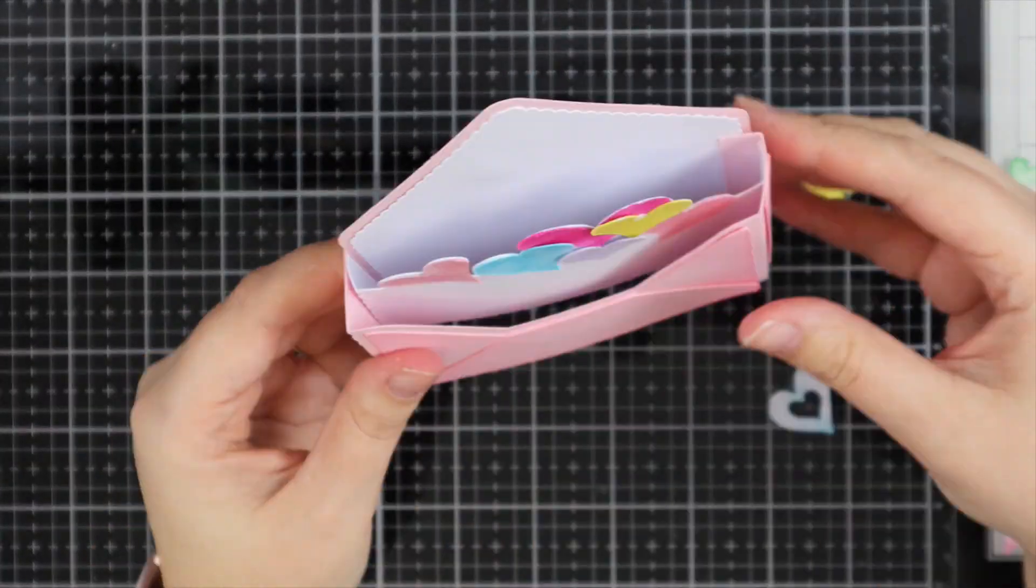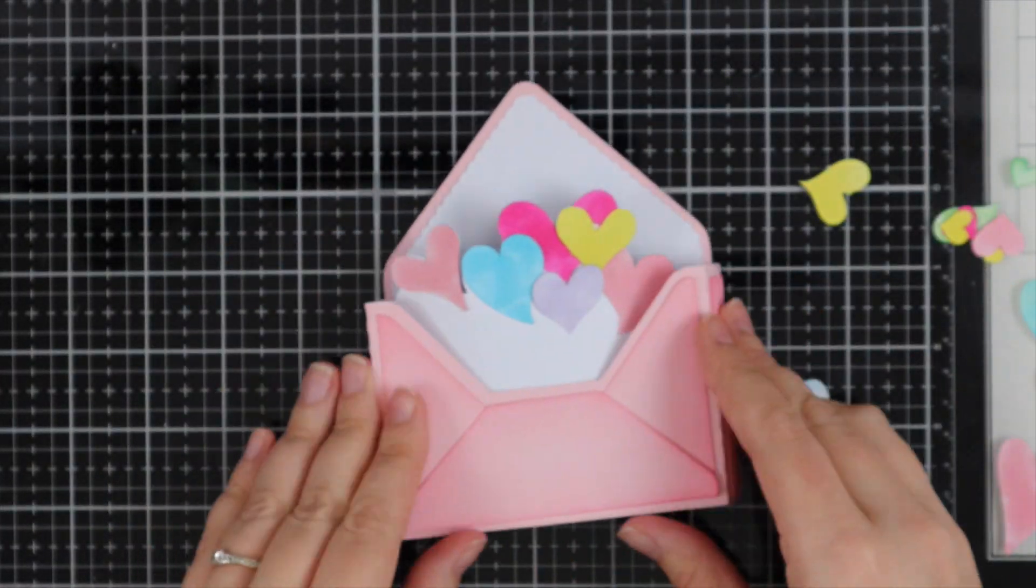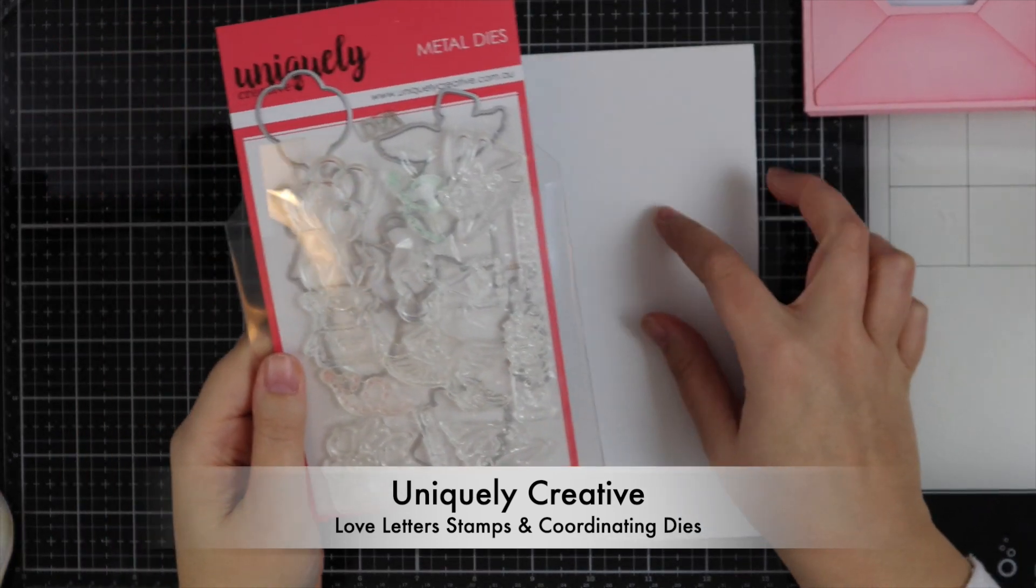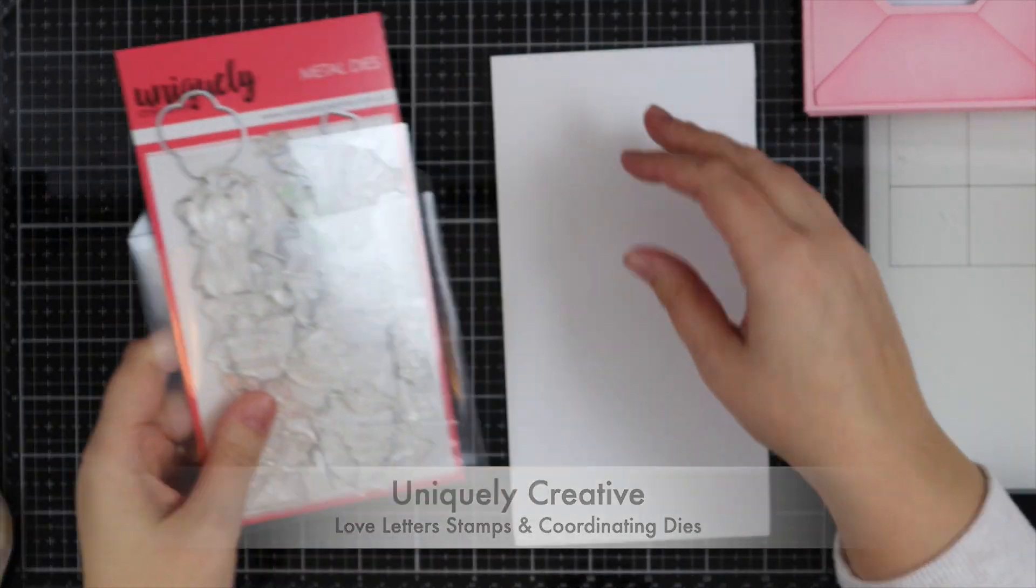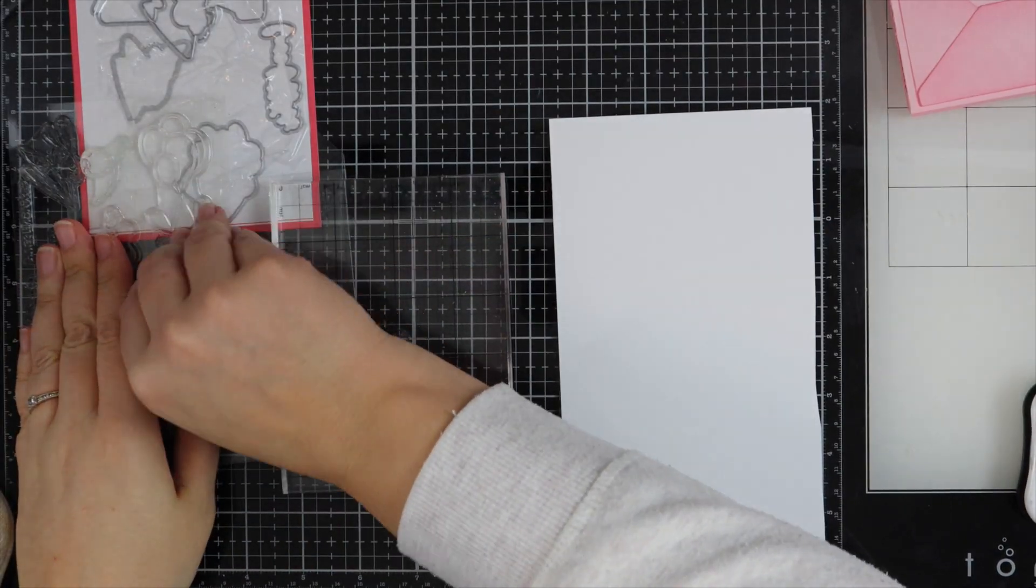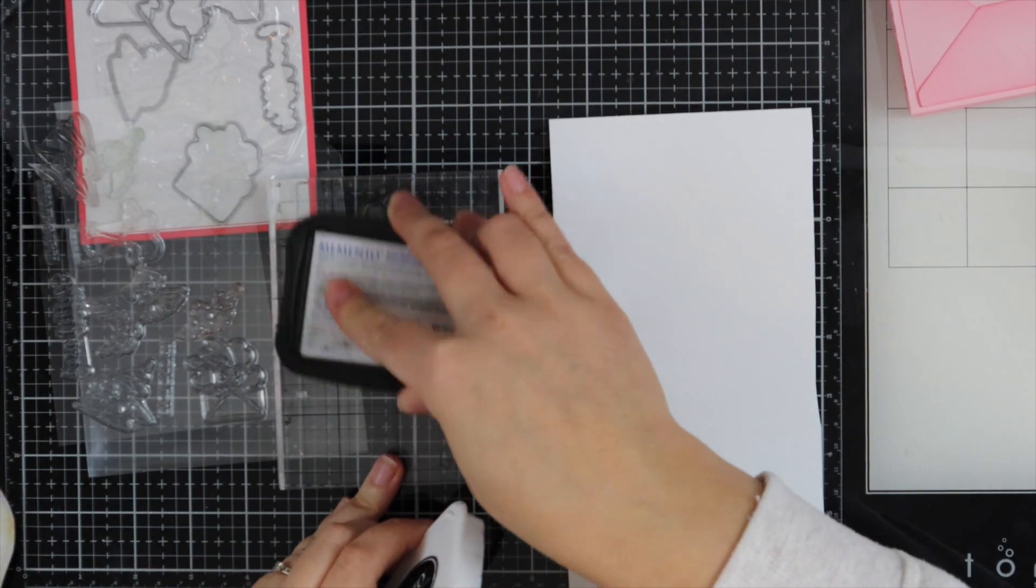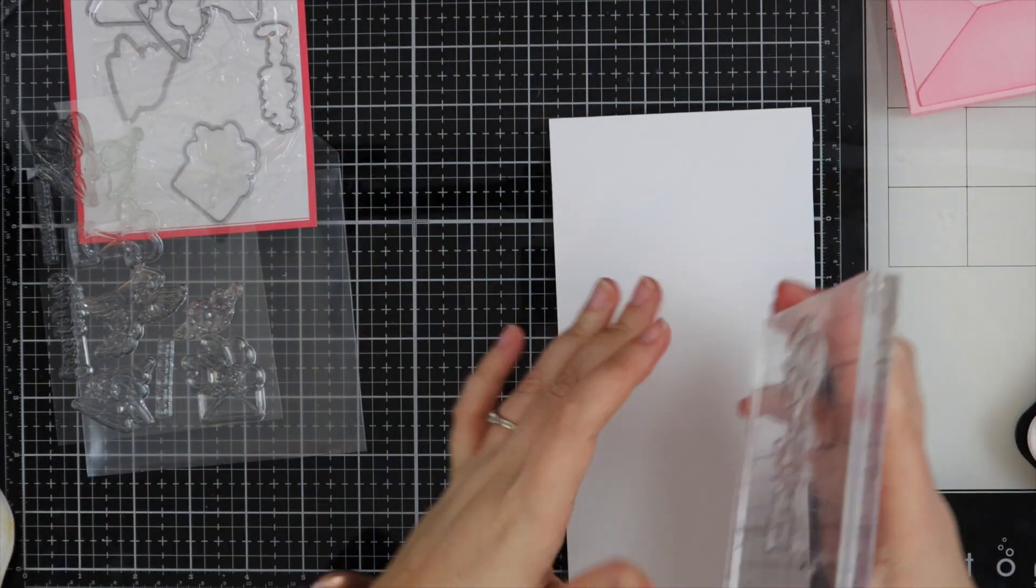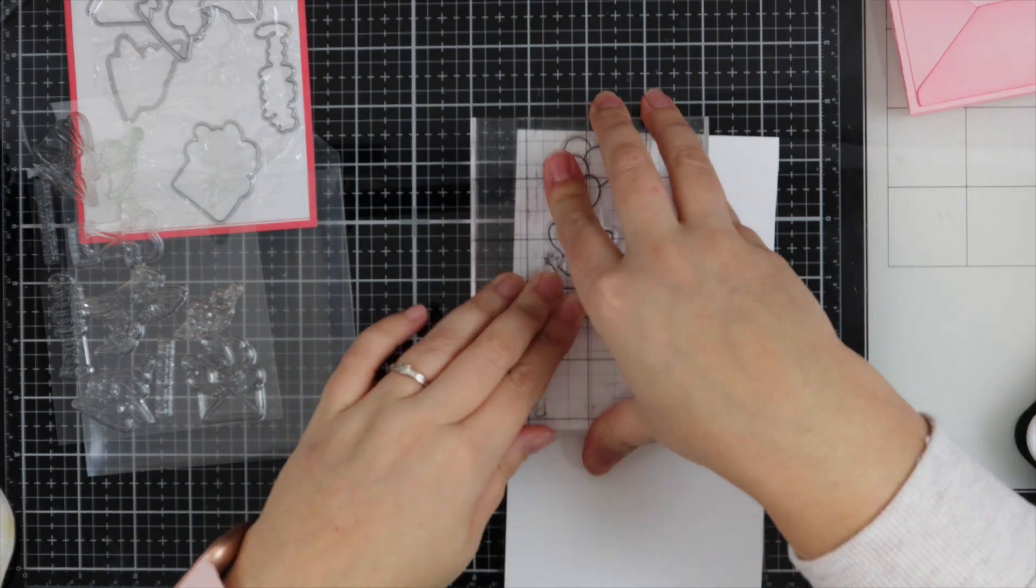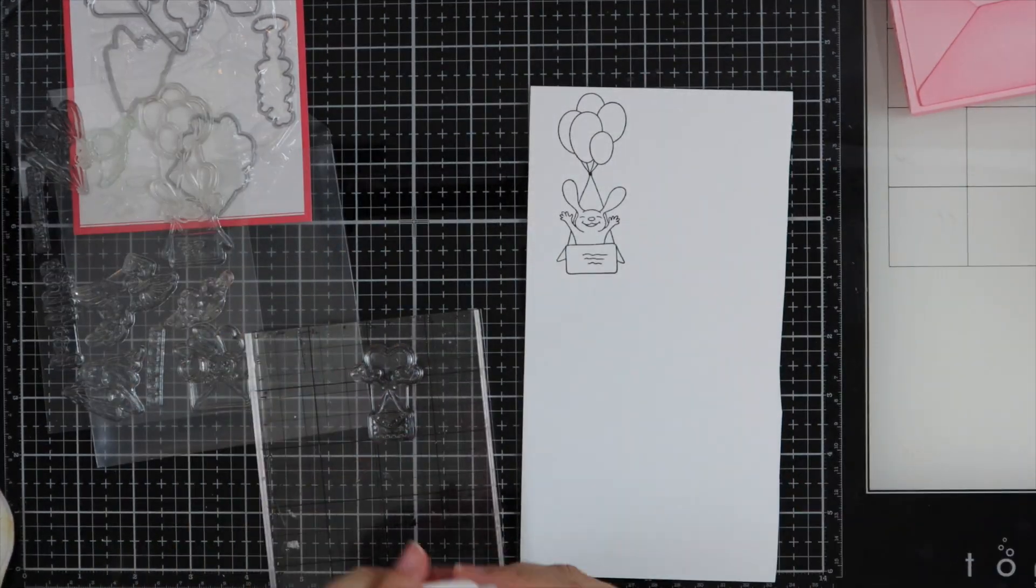And then that's pretty much how I've put the box together. So now I'm going to be using the Love Letters stamps and coordinating dies. So this is from Uniquely Creative, and these stamps are so sweet. I loved how they were holding little love notes and the balloons. So I'm just going to go ahead and stamp these out.